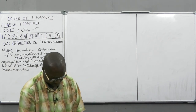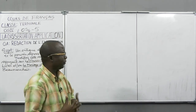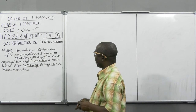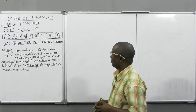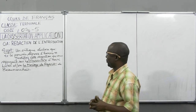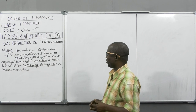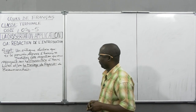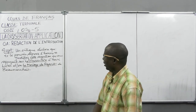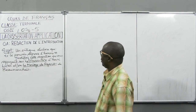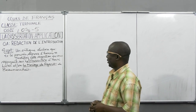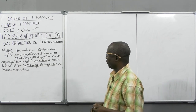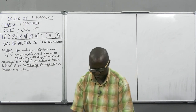Voilà le sujet sur lequel nous allons travailler et que nous avons déjà amorcé la dernière fois : « Un critique déclare que le pouvoir déprave l'homme. Justifiez cette assertion en vous appuyant sur Le Pleurer-Rire d'Henri Lopez et/ou Le Mariage de Figaro de Beaumarchais. »